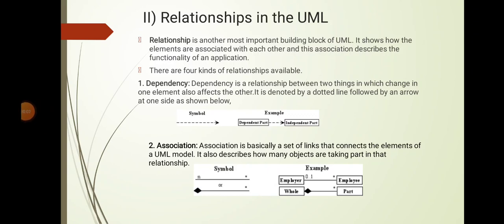Hello students, today we will see the next topic: relationships in the UML diagram. Relationship is another most important building block of UML. It shows how the elements are associated with each other, and these associations describe the functionality of an application. There are four kinds of relationship in UML.